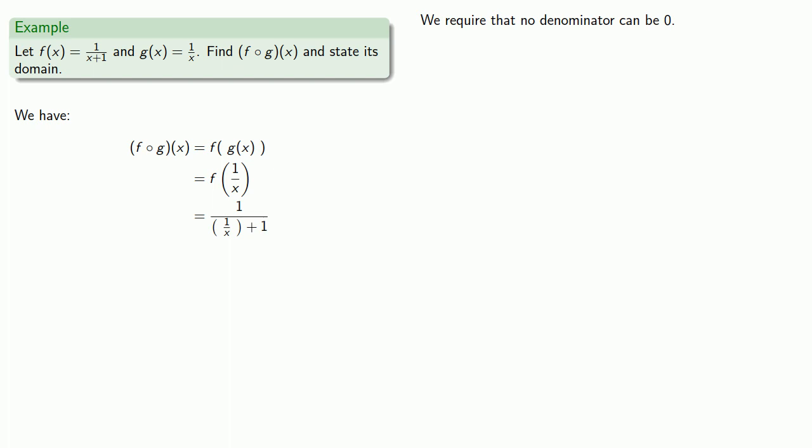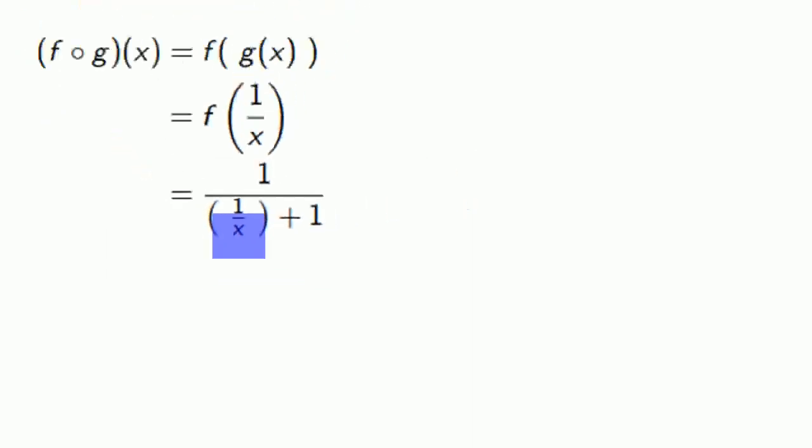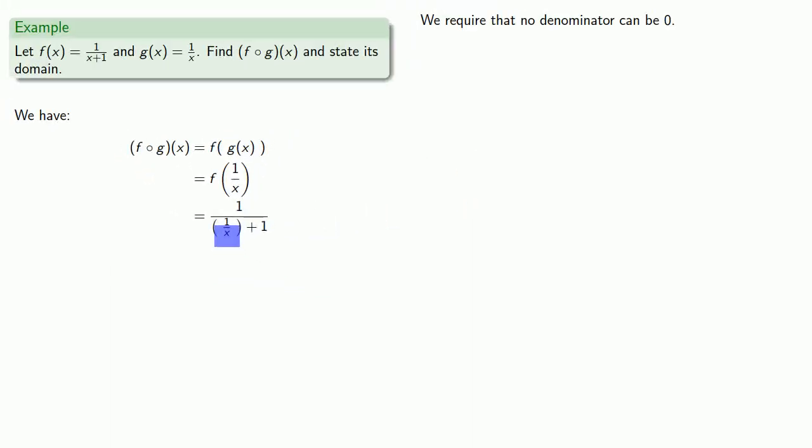The thing to recognize here is we actually have two denominators. We have this little tiny denominator here, which cannot be 0, and so we require that x can't be 0.